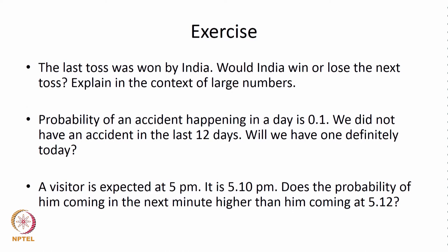A visitor is expected at 5 pm; it is now 5:10 pm — does the probability of the visitor coming in the next minute become higher than at 5:12? Once again, in the context of the law of large numbers, the probability of the person coming is still the same. These three different situations help us understand the role of large numbers: while we often convert proportions to probabilities based on a limited sample, we must always keep in mind that probability numbers are computed with a large number of trials or experiments.